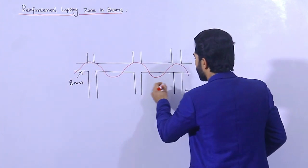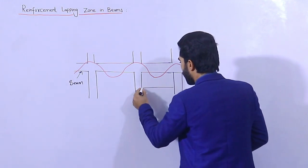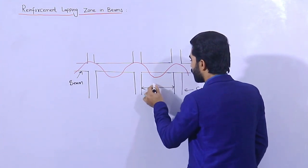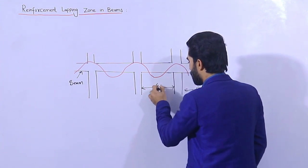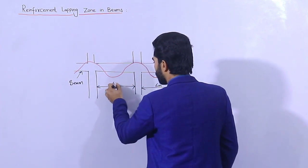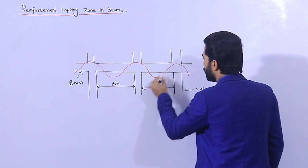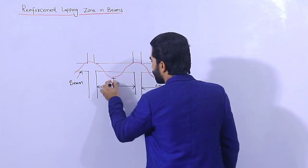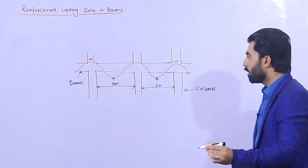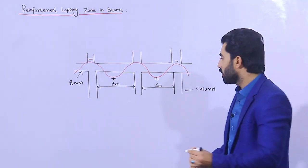Here, this is the span between two columns. Suppose this is 6 meters and this is also 6 meters. Here we have positive bending moment, here we have negative bending moment, and also we have positive bending moment and negative bending moment. So now, where can we provide lapping length? Where is the best place — in the tension zone or in the compression zone?